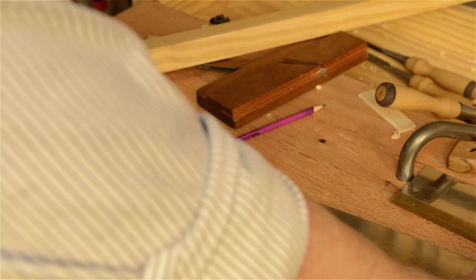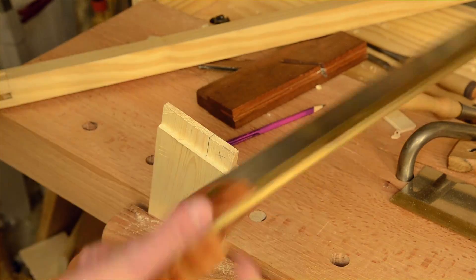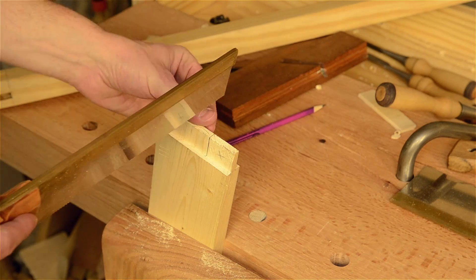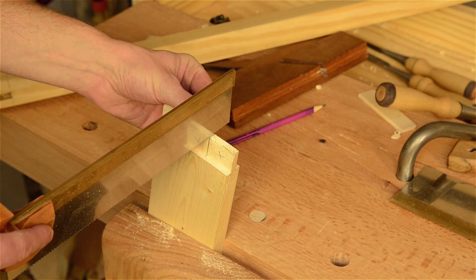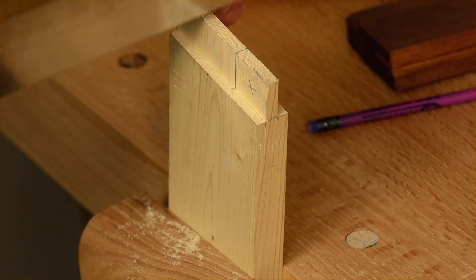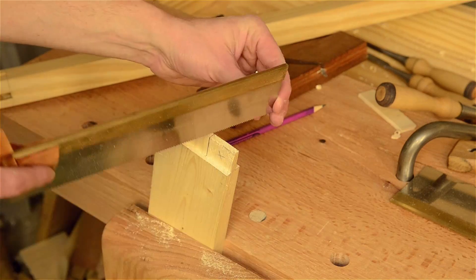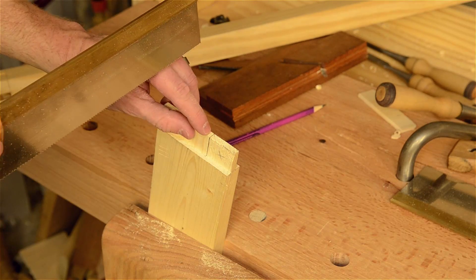So for this you can use a little dovetail saw because you can see it will go down through there. And you are not cutting through very much depth here. So make sure that you put it on the waste side. Not on the tenon side here. And make sure it is not twisted. This is why that little line there is important.